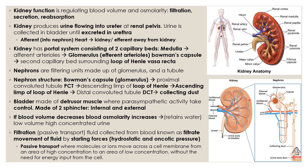Nephrons are the filtering unit made up of the glomerulus and a tubule. The kidney is made up of almost one million nephrons. They're located at the renal cortex and the renal medulla.